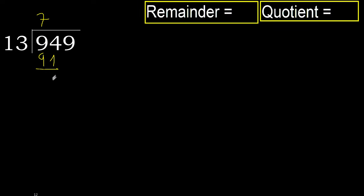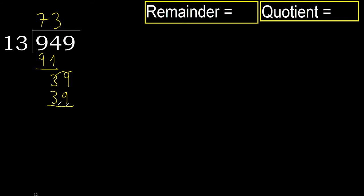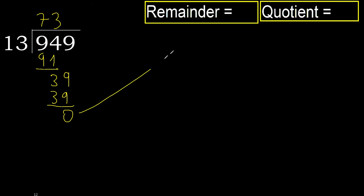Subtract to get 3, bring down the next digit: 39. 13 multiplied by 4 is greater, so multiplied by 3: 39, which is not greater. Subtract to get 0. There are no more digits, therefore finish.